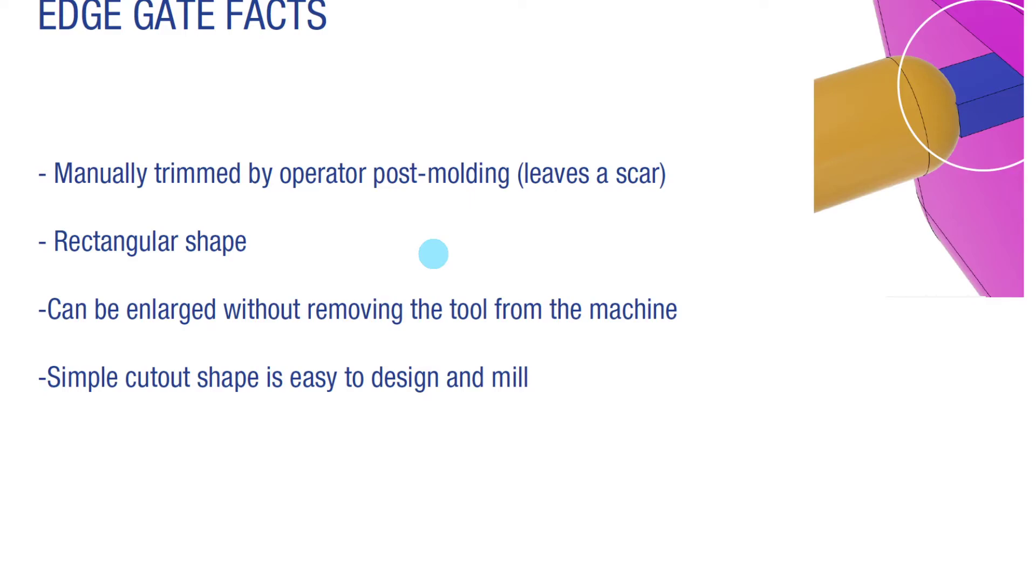The gate itself has a rectangular shape to it, and the edge gate channel can be enlarged without removing the tool from the machine. This means the core and cavity can be separated from each other, and someone can grind down the channel to make it larger so more plastic can flow. This rectangular edge gate can become elongated in its width, which makes it easier for the plastic to come into the part.